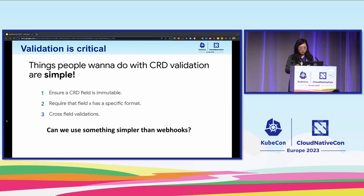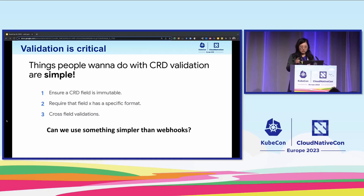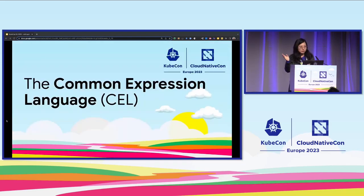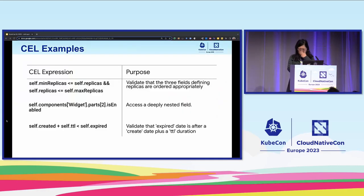For quite a while, webhook was the only solution for the functionalities we wanted. After research, we found that the vast majority of use cases people want for CRD validation are pretty simple: ensure a field is immutable, apply a specific format to fields, or do some basic cross-field checks. So the question becomes: can we use something simpler than a webhook? Here is what we proposed: the common expression language, also known as CEL.